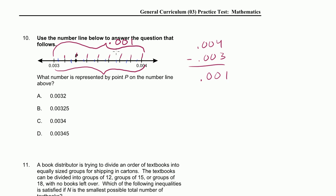Each of those increments is 1/8 of 0.001, or 0.001 divided by 8. The point in question is exactly two increments past 0.003. So let's figure out how much each increment is: 0.001 divided by 8. Let's put a decimal there — 8 goes into 0, zero times.